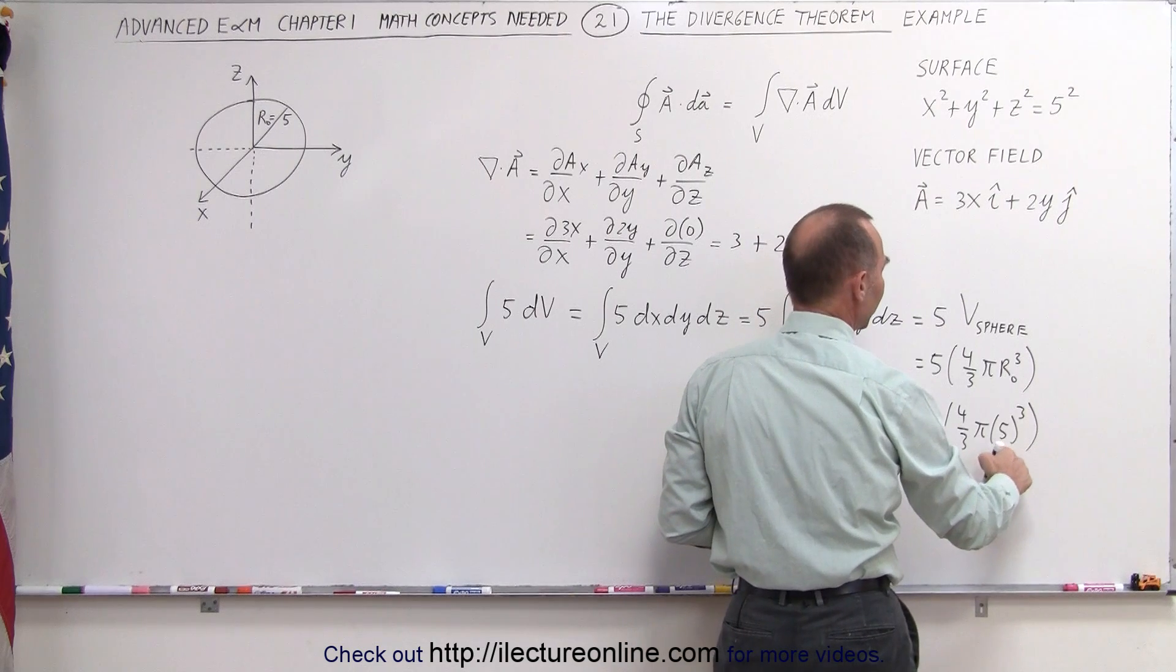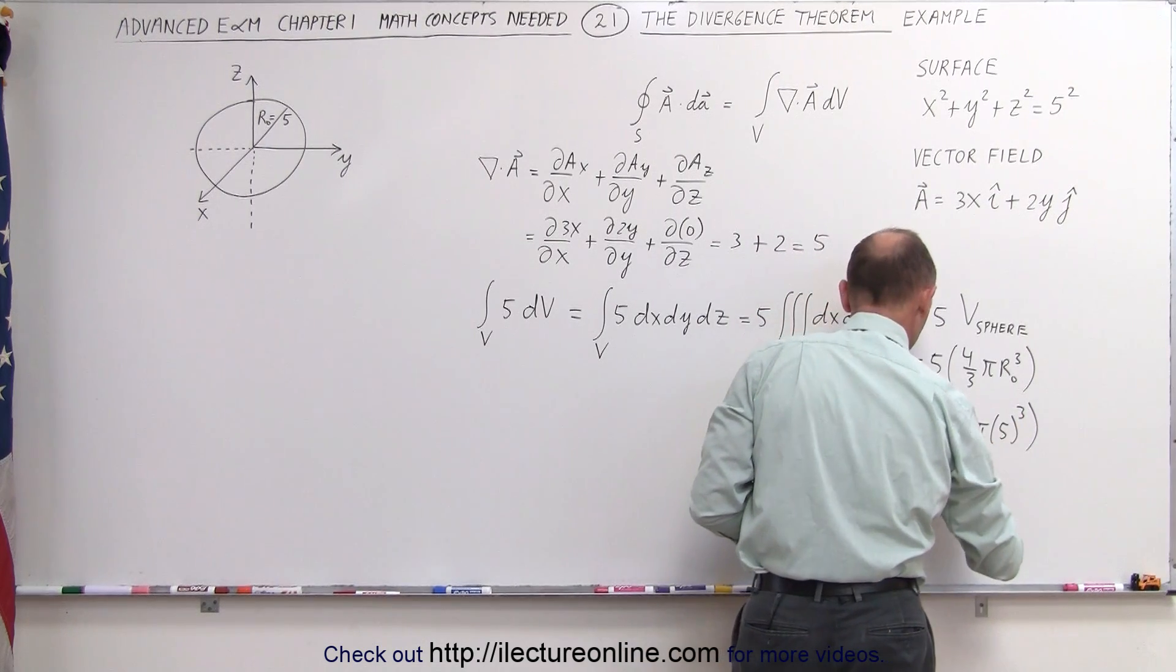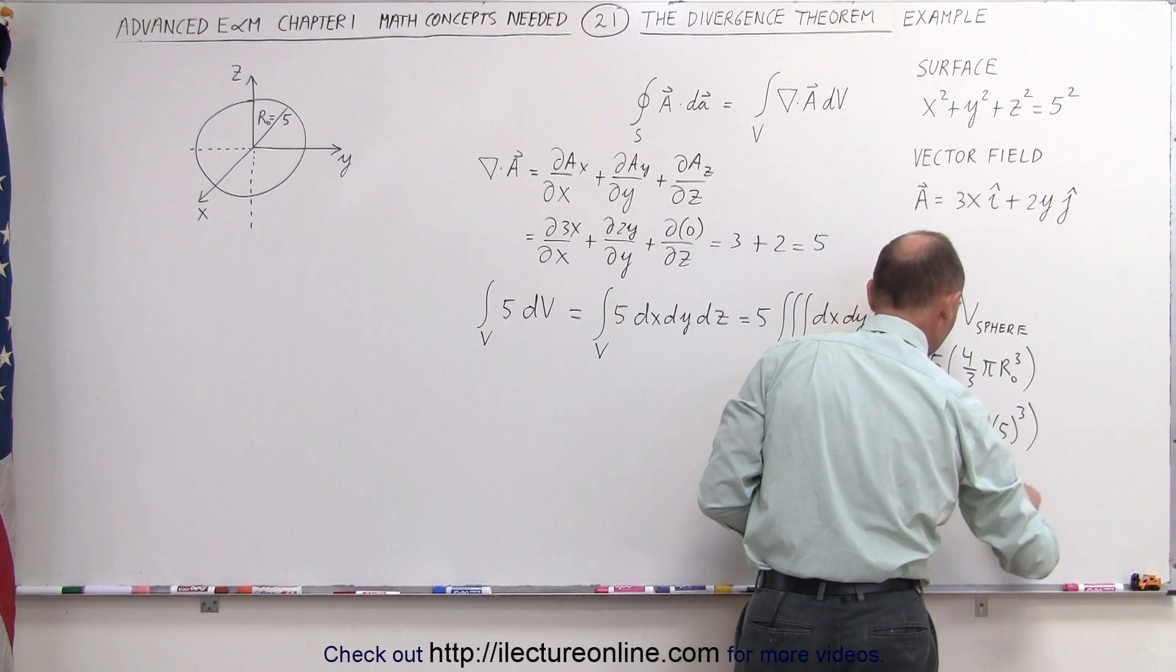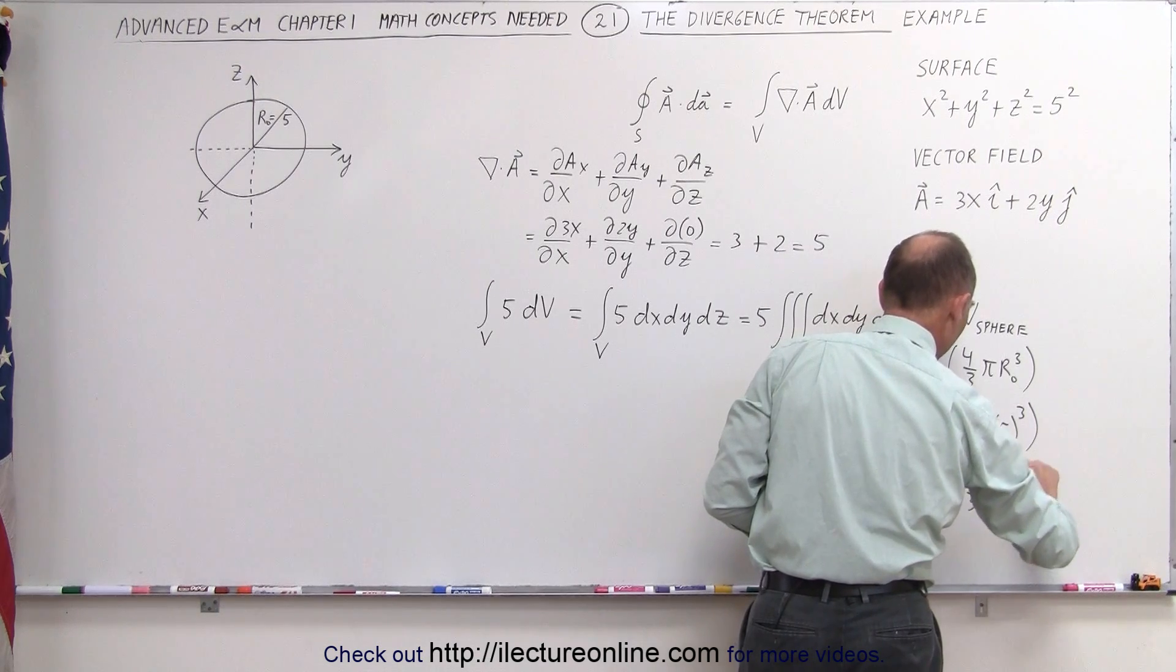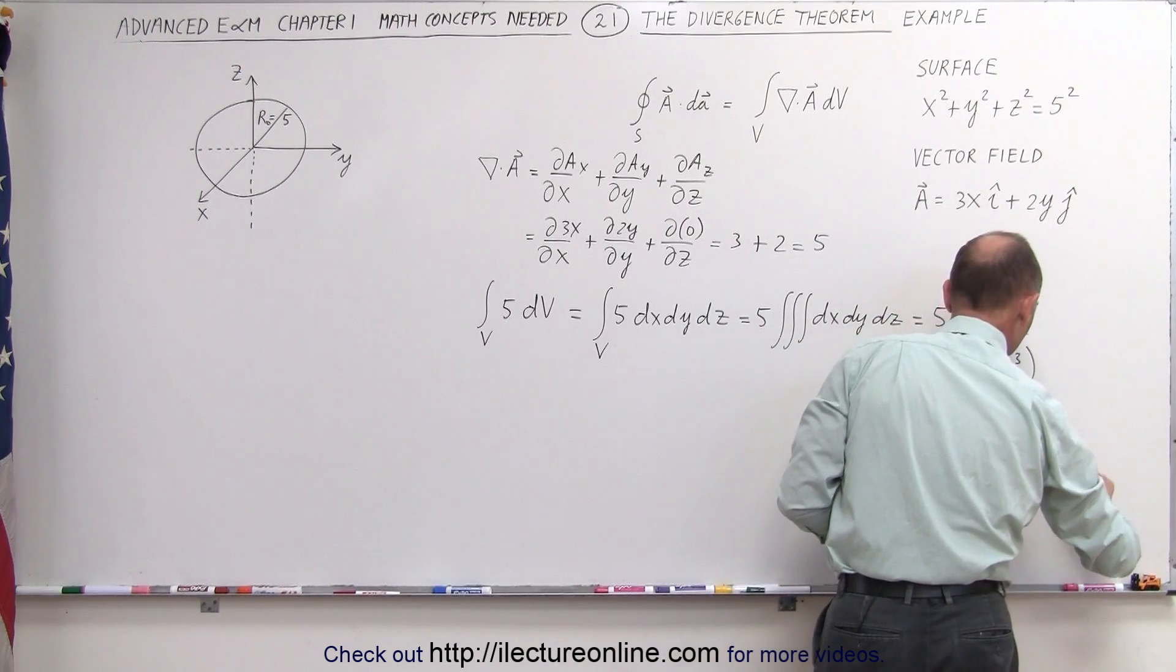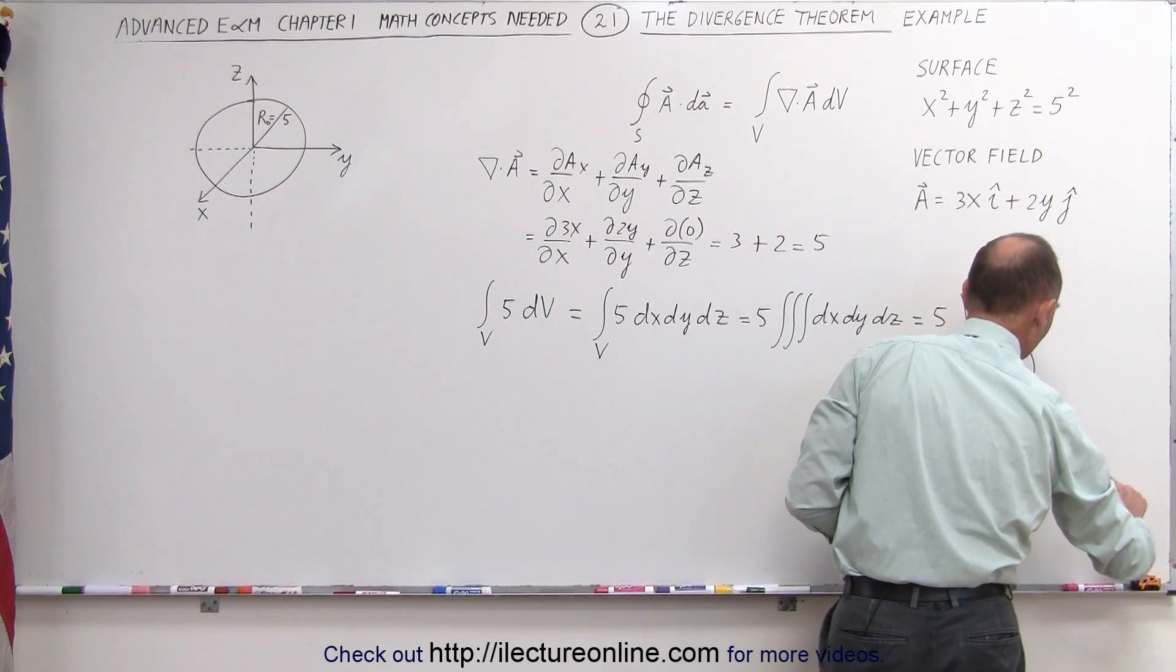That's 125 times 4, that's 500. This is equal to 5 times 500 divided by 3 times pi, or 2,500 divided by 3 times pi.